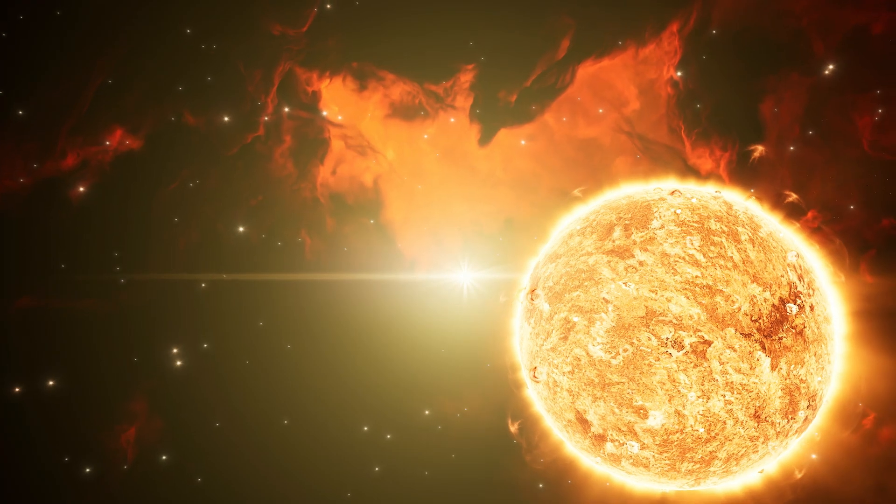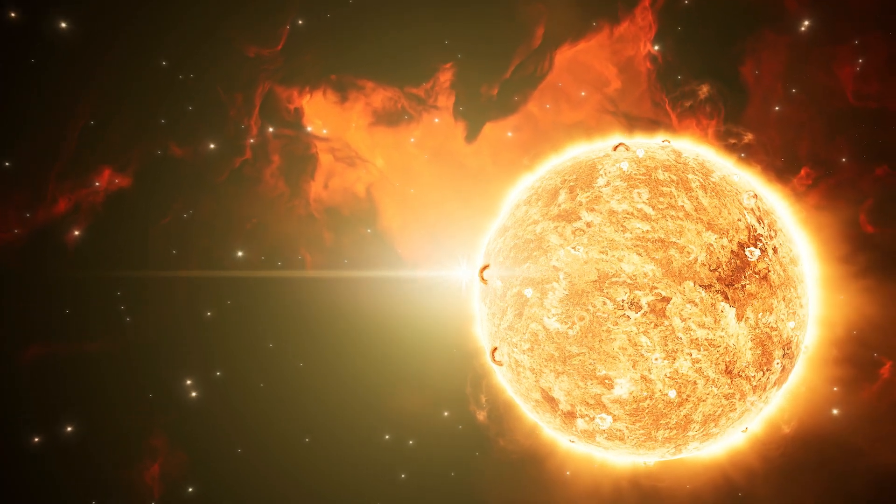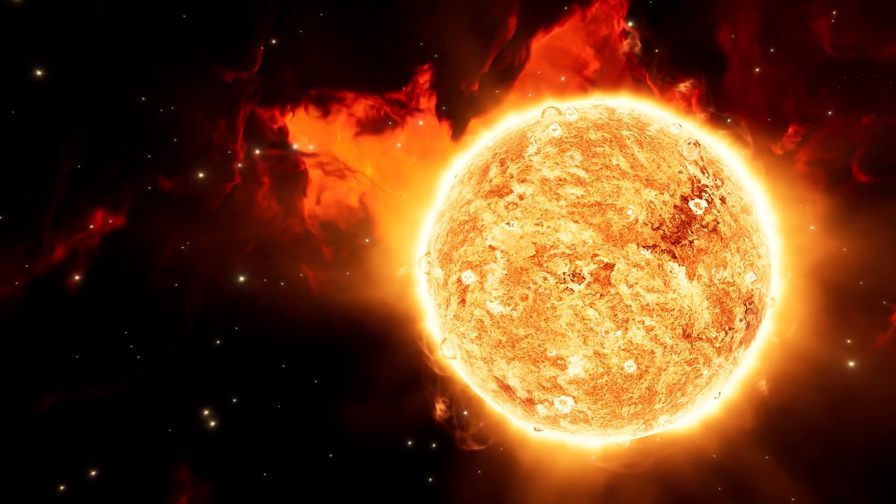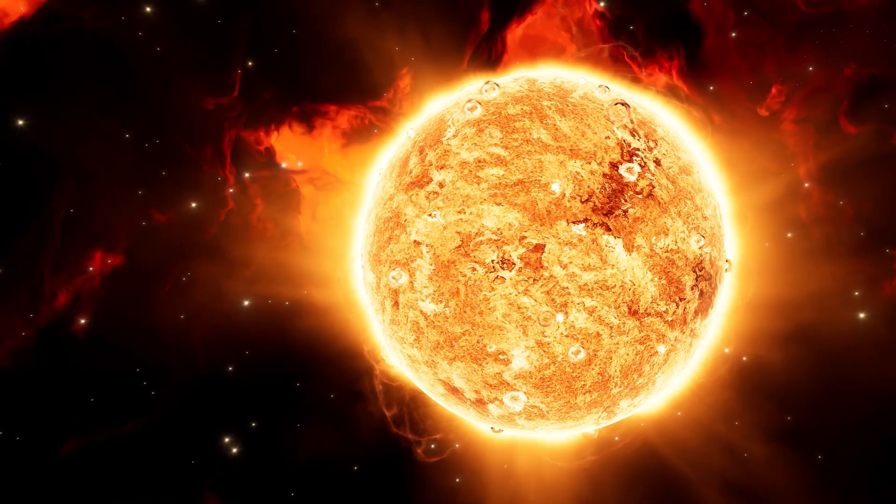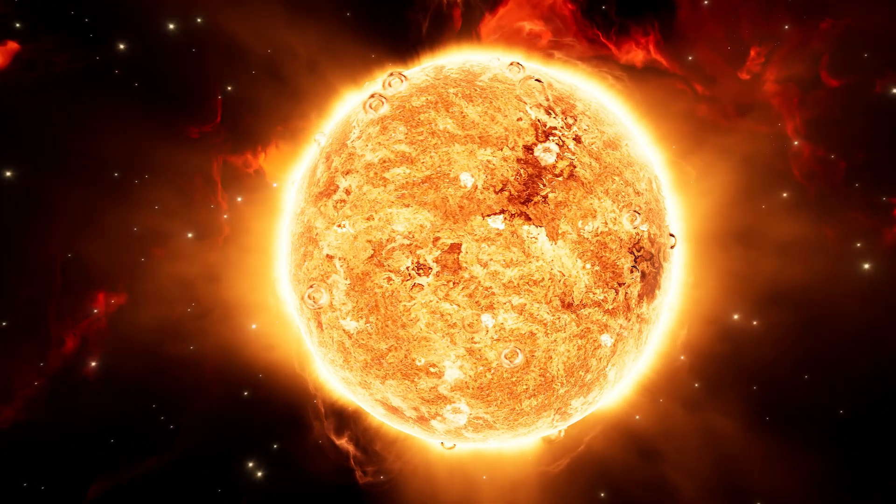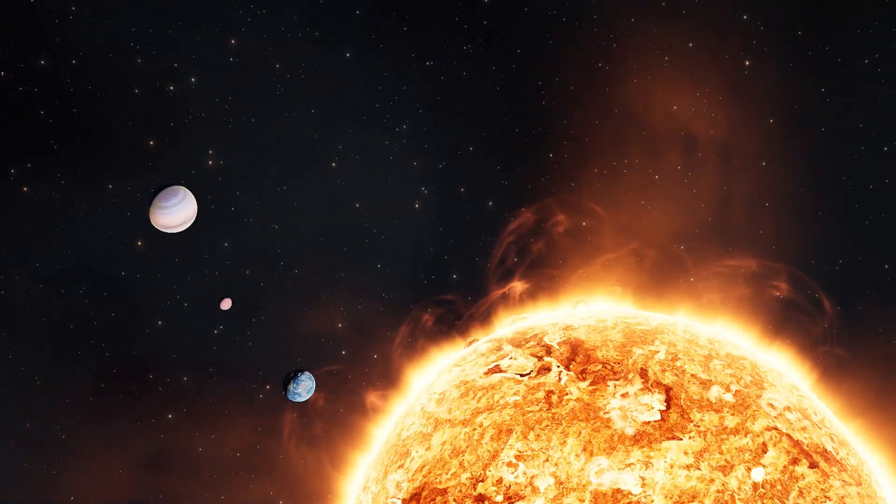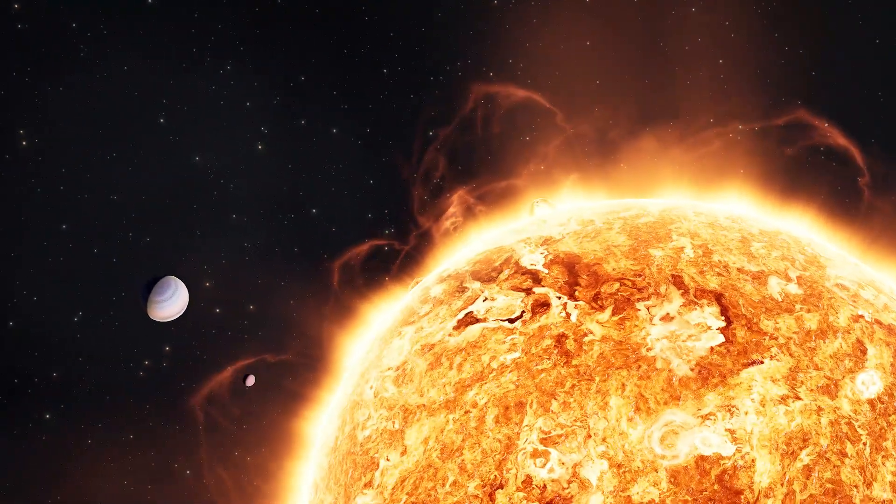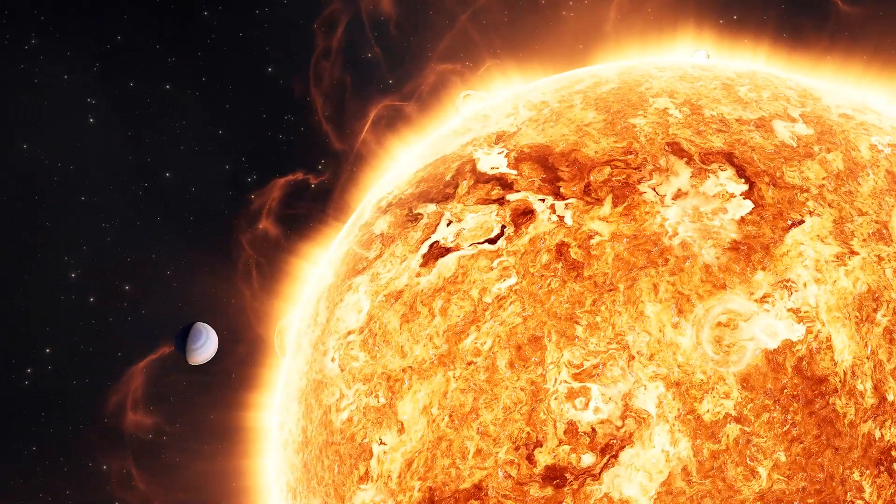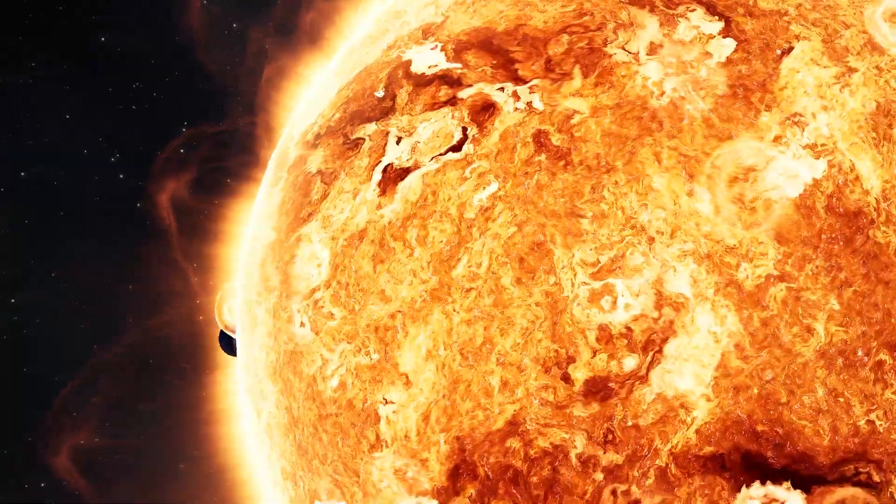Betelgeuse is a red supergiant hanging out in the Orion constellation, about 640 light years from Earth. It's not just big, it's absurdly massive, one of the largest and brightest stars visible to the naked eye. If you dropped it into our solar system, it would swallow Mercury, Venus, Earth, Mars, and keep going past Jupiter like it's nothing.